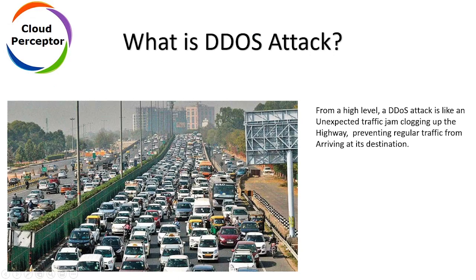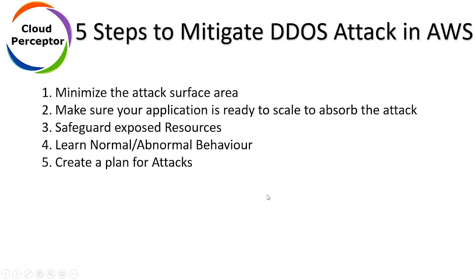This is how a DDoS attack works — think of it like a highway where there is unexpected traffic jam. The hacker creates many requests on your network, preventing your regular traffic from coming through and causing clogging in the network, so your packets do not arrive at the destination.